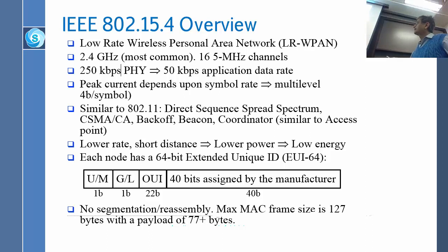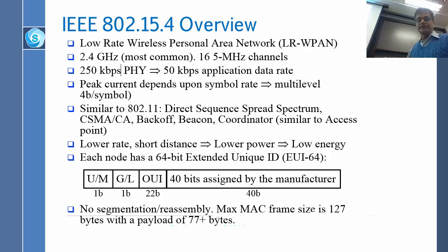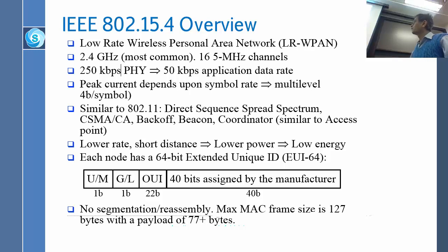The peak current depends upon the symbol rate — multi-level, 4 bits per symbol. So what they are saying is that you take 4 bits, just like we do in QAM-16, and make a symbol out of that. The current will depend upon how many bits per symbol. If 64 QAM, then of course it will draw different current than 16 QAM. The larger the QAM, the more power required.